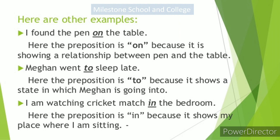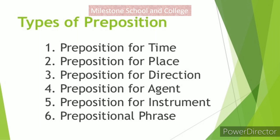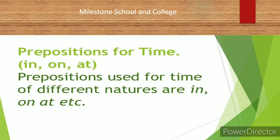Without preposition, we can't think of a proper sentence without making a grammatical mistake. There are different kinds of prepositions: preposition of time, preposition of place, preposition of direction, preposition of agent, and preposition for instrument. Instrument means any metal or tool. Preposition for agent means the person who has done any work, or a doer — agent means doer. These are the basic types of preposition. Now we shall try to explain one by one the different types of preposition.